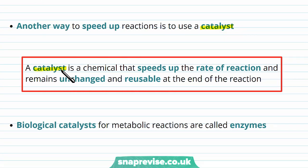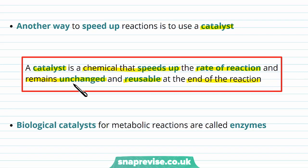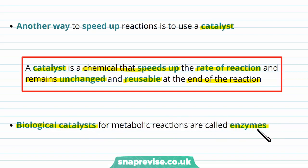A catalyst in science is defined as a chemical which speeds up the rate of a reaction, but it remains unchanged and reusable at the end of the reaction. It's involved in the reaction but doesn't become changed, and can be used again as soon as one reaction is finished. A biological catalyst in our cells is a protein known as an enzyme.